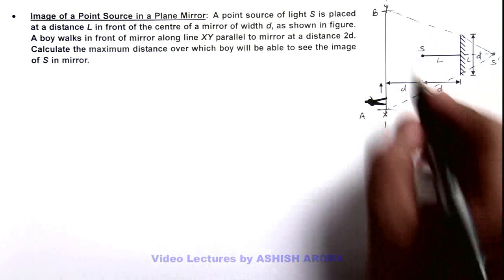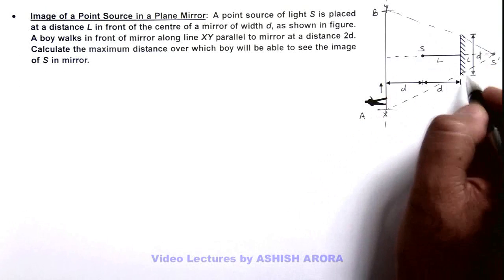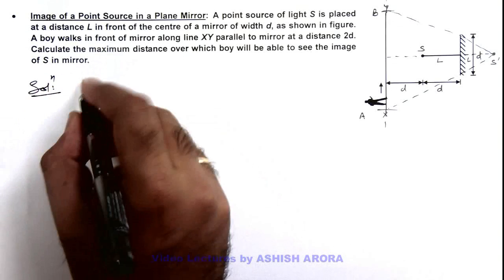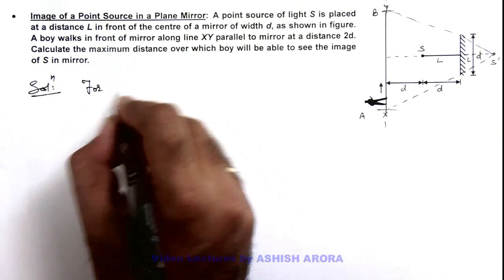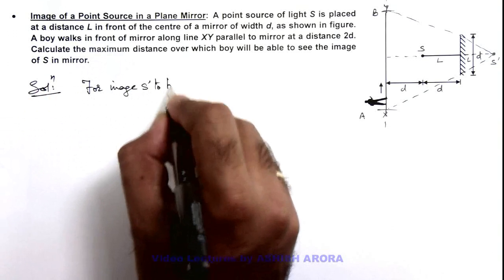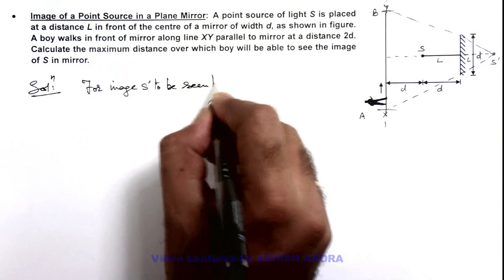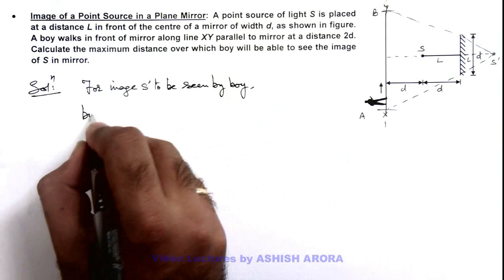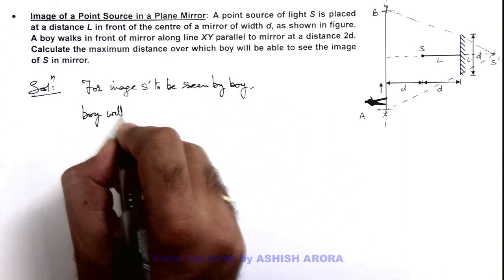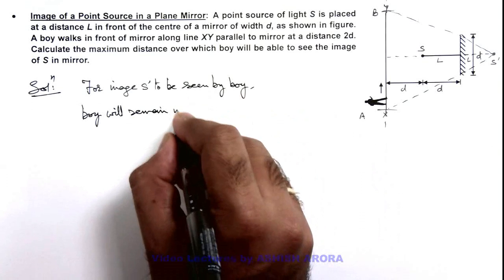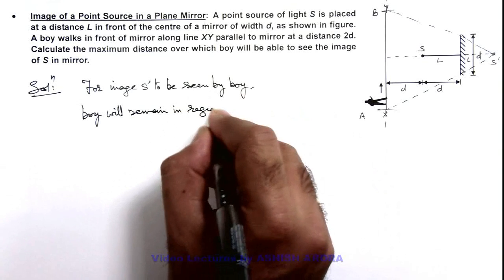In this situation, we can use geometry to calculate it. Here in solution, we can first write: for image S dash to be seen by boy, it has to remain in region AB.